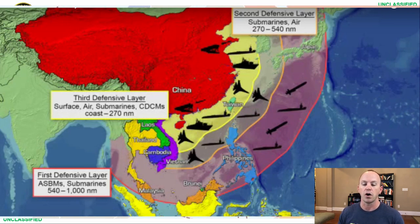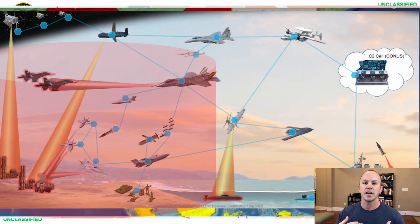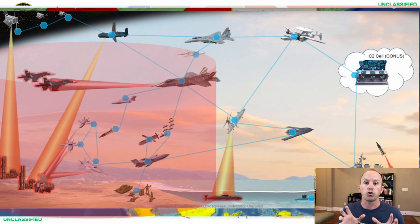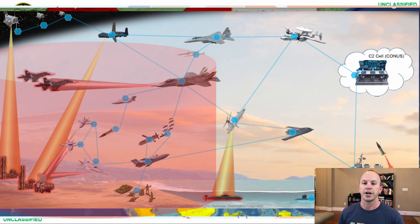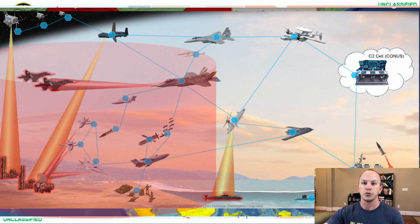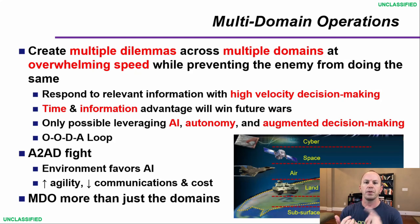China is projecting through the second island chain as well, trying to increase their sphere of influence regionally but also hoping globally, and then preventing others from projecting power into their areas. The way the U.S. thinks about countering that is through a network solution across all of the domains, bringing all of that to bear simultaneously against that potential adversary. China and Russia are not adversaries right now, but they are competitors, and multi-domain operations is that solution.